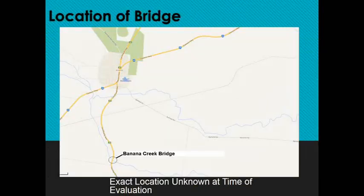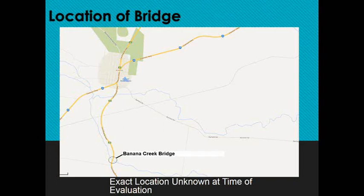Here we have the location of the bridge, south of the small town of Banana. At the time of evaluation, we didn't actually have the exact location, so we were using very raw, very generic assumptions in the model. The precision of this analysis is not particularly great, but given the time constraints and the low project cost, it was deemed necessary and appropriate.